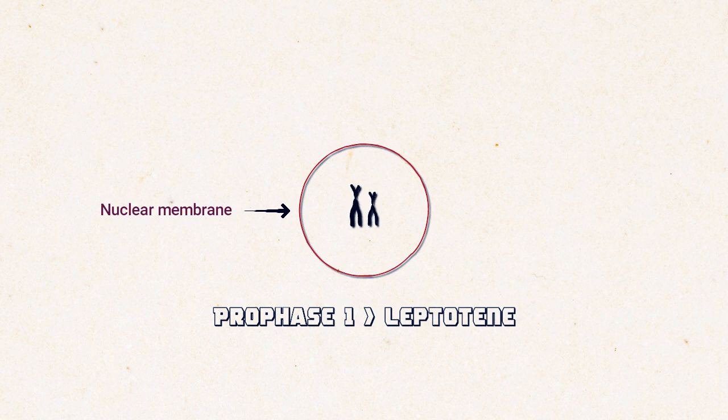In the Leptotene stage nothing really happens except the chromosomes become condensed and visible.